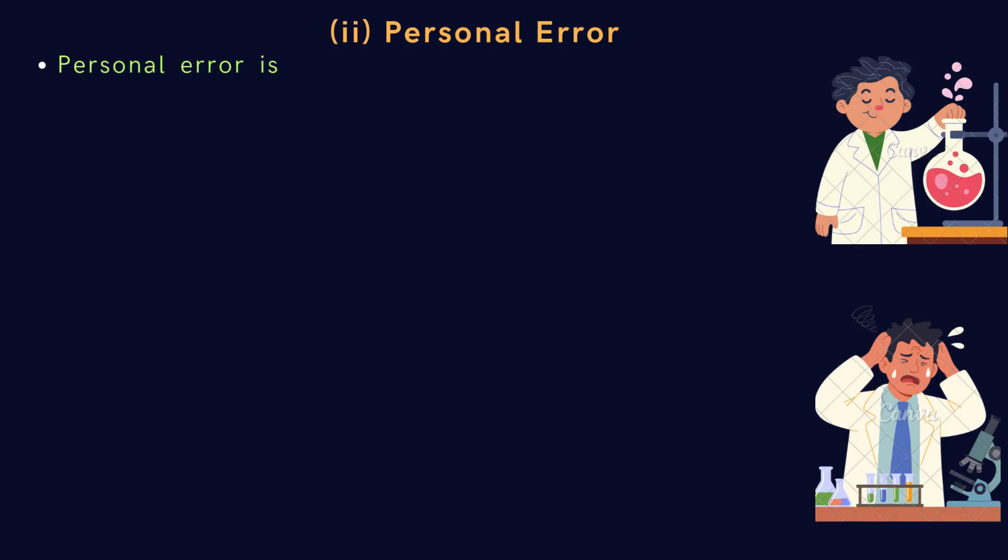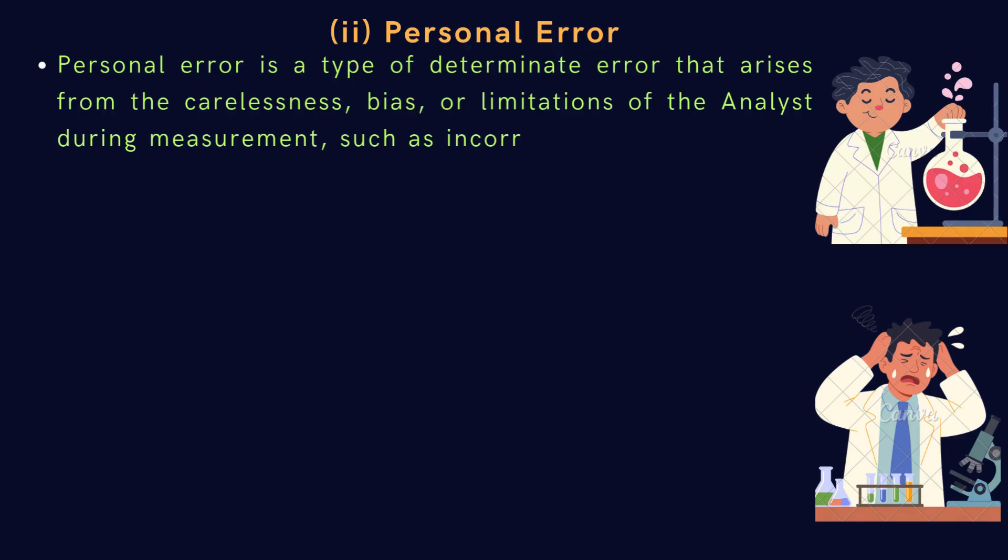The second type of systematic error is personal error. Personal error is a type of determinate error that arises from the carelessness, bias, or limitations of the analyst during measurement, such as incorrect reading, timing, or recording of data.